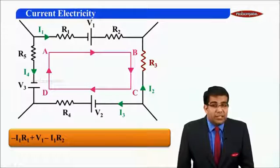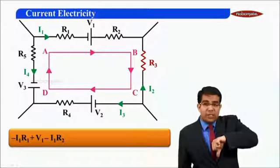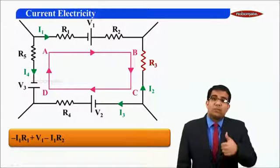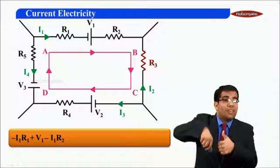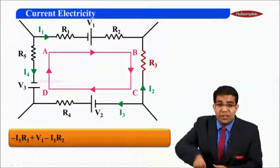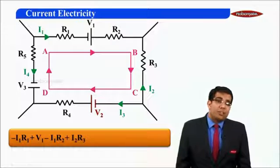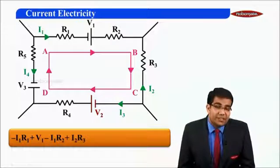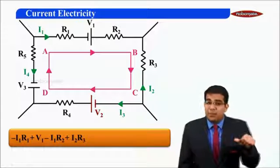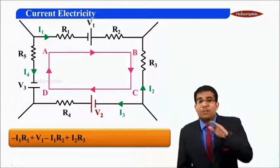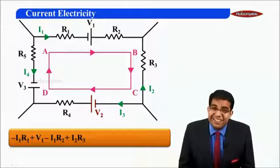Now for R3 — I am moving downwards from B to C, and current I2 is moving upwards. So I am moving against the direction of current, and I will have a gain of plus I2 R3. Moving from C to D, I am going from the negative terminal of the battery towards the positive terminal, so I will have a gain of plus V2.